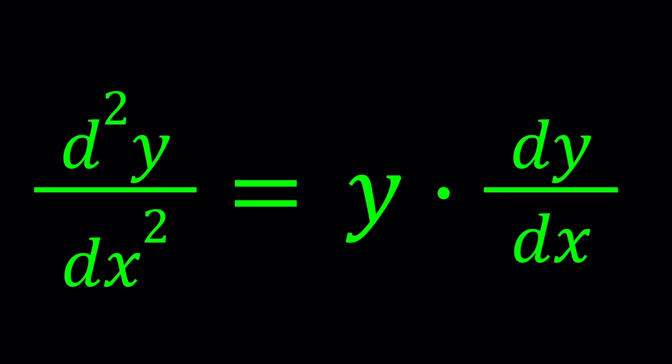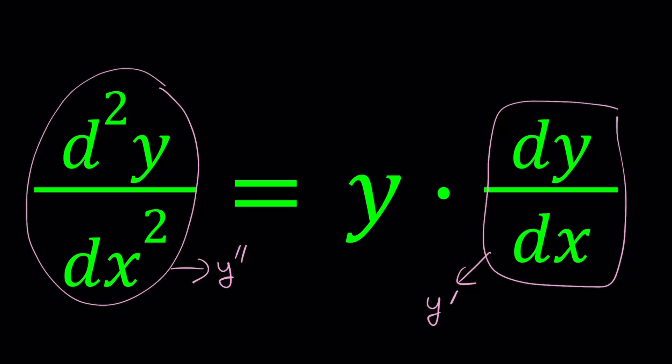So what is dy over dx and what is d squared y over dx squared? These expressions might look confusing, but they're just notations which mean the derivatives of y with respect to x. dy over dx basically represents the first derivative of y with respect to x, which we can abbreviate as y prime. And d squared y over dx squared is the second derivative or the derivative of the first derivative of y with respect to x. And we can use y double prime for that.